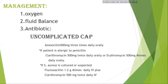Antibiotics: For uncomplicated pneumonia, duration is 5 days. Amoxicillin 500 mg three times daily orally. If allergic to penicillin: clarithromycin 500 mg twice daily orally, or erythromycin 500 mg four times daily orally. If Staphylococcus aureus is cultured or suspected: flucloxacillin 1–2 g four times daily IV plus clarithromycin 500 mg twice daily IV. Staphylococcus aureus is suspected when there is cavitation, pneumatocele, or multilobar shadowing.